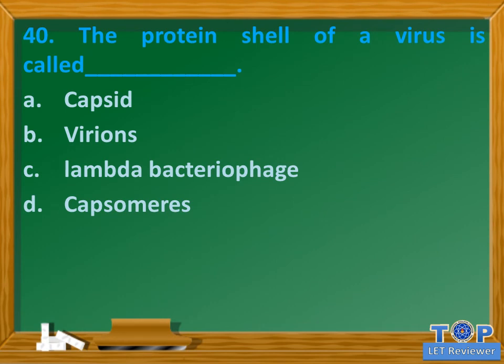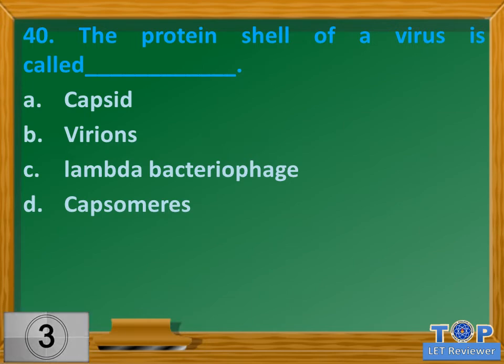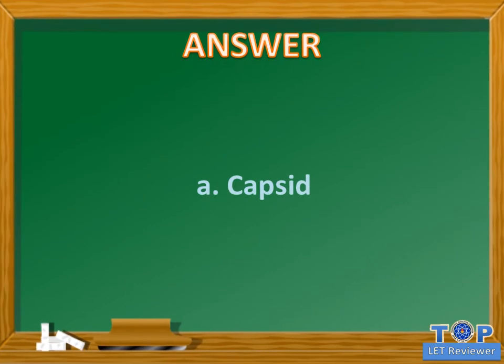Question number 40. The protein shell of a virus is called blank. A. Capsid. B. Virions. C. Lambda bacteriophage. D. Capsomers. Answer: A. Capsid.